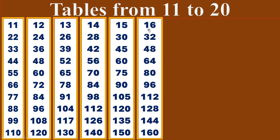16 times table. 16 ones are 16. 16 twos are 32. 16 threes are 48. 16 fours are 64. 16 fives are 80.